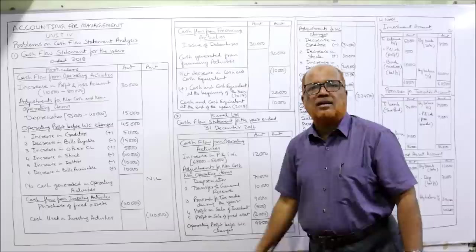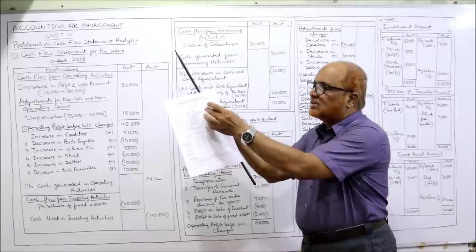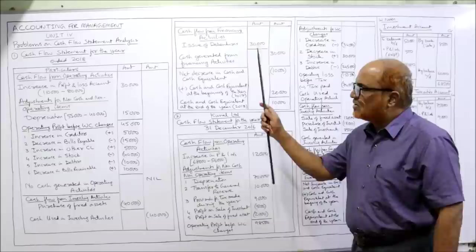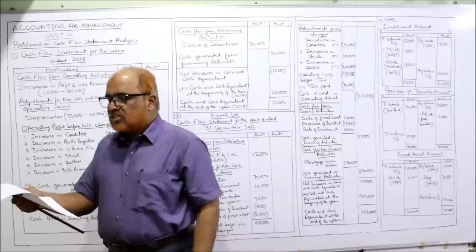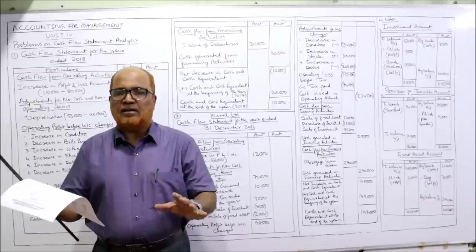Whatever you get as the answer here, the same cash balance should be there in the current year balance sheet. 10,000 is given in the balance sheet and we also got 10,000 — our cash flow statement is correct. This is the first problem. Now the second problem: the summarized balance sheet of Kunal Limited as at 31st December 2015 and 31st December 2016. Current year is 2016, last year is 2015. Share capital: 4,50,000 — no change.